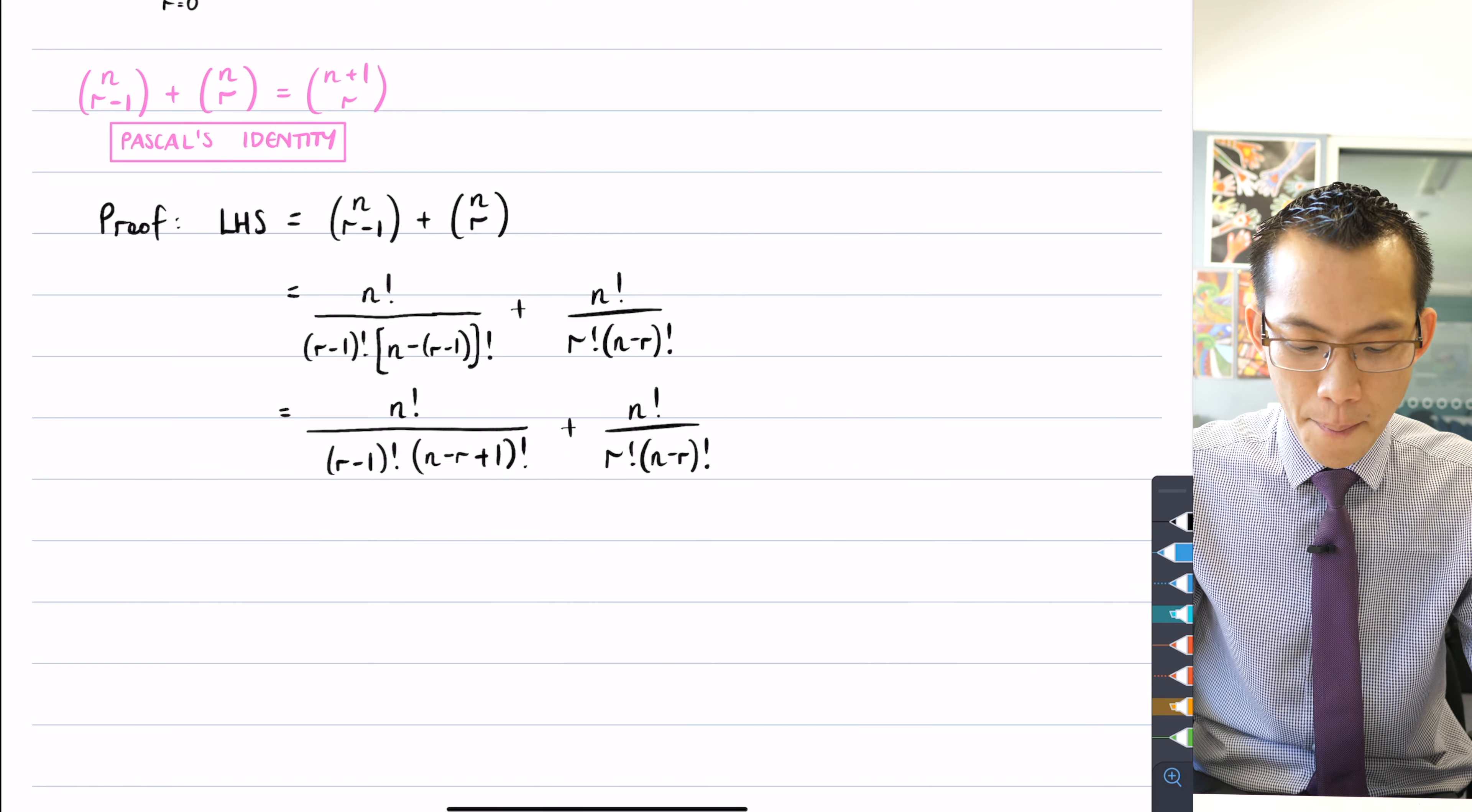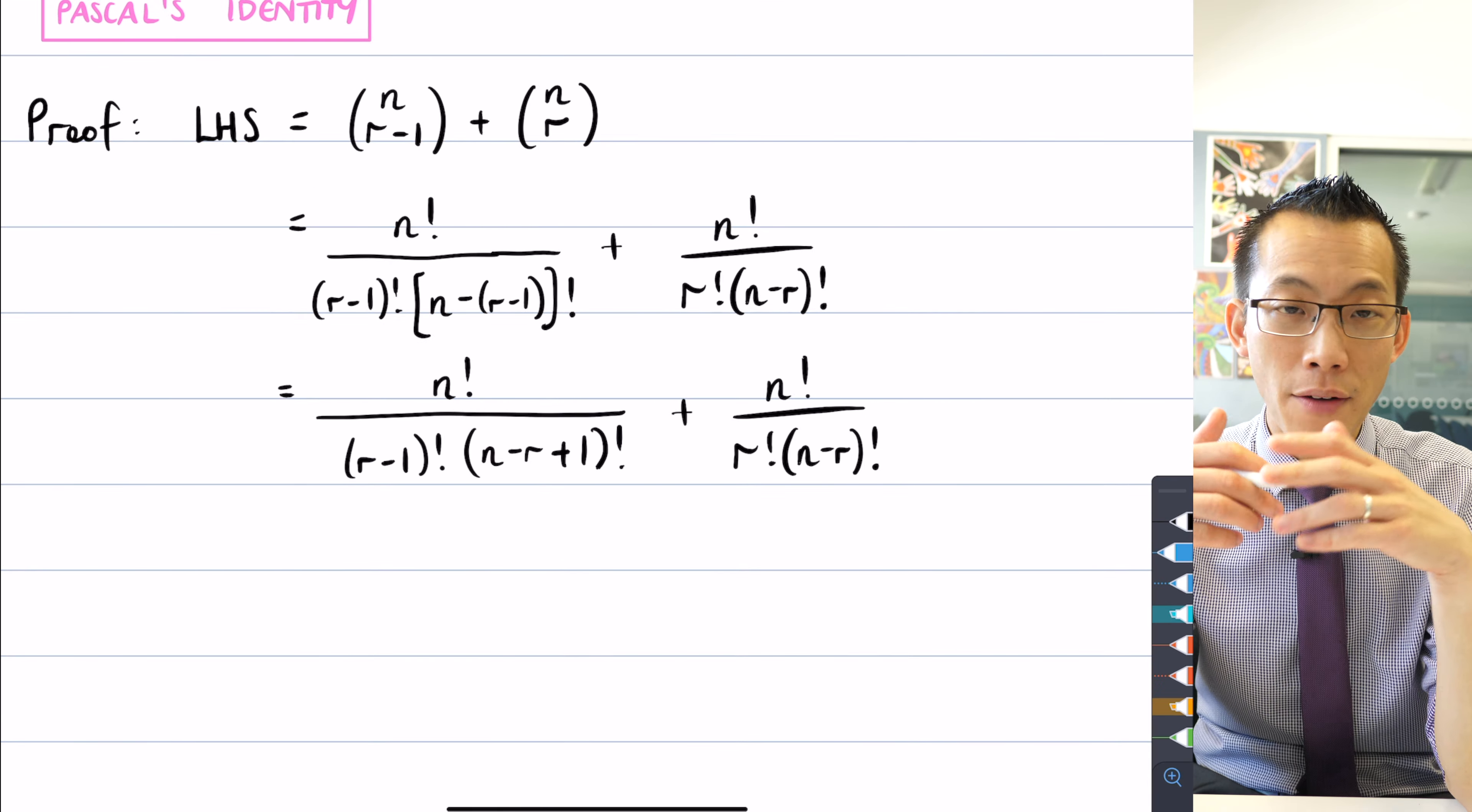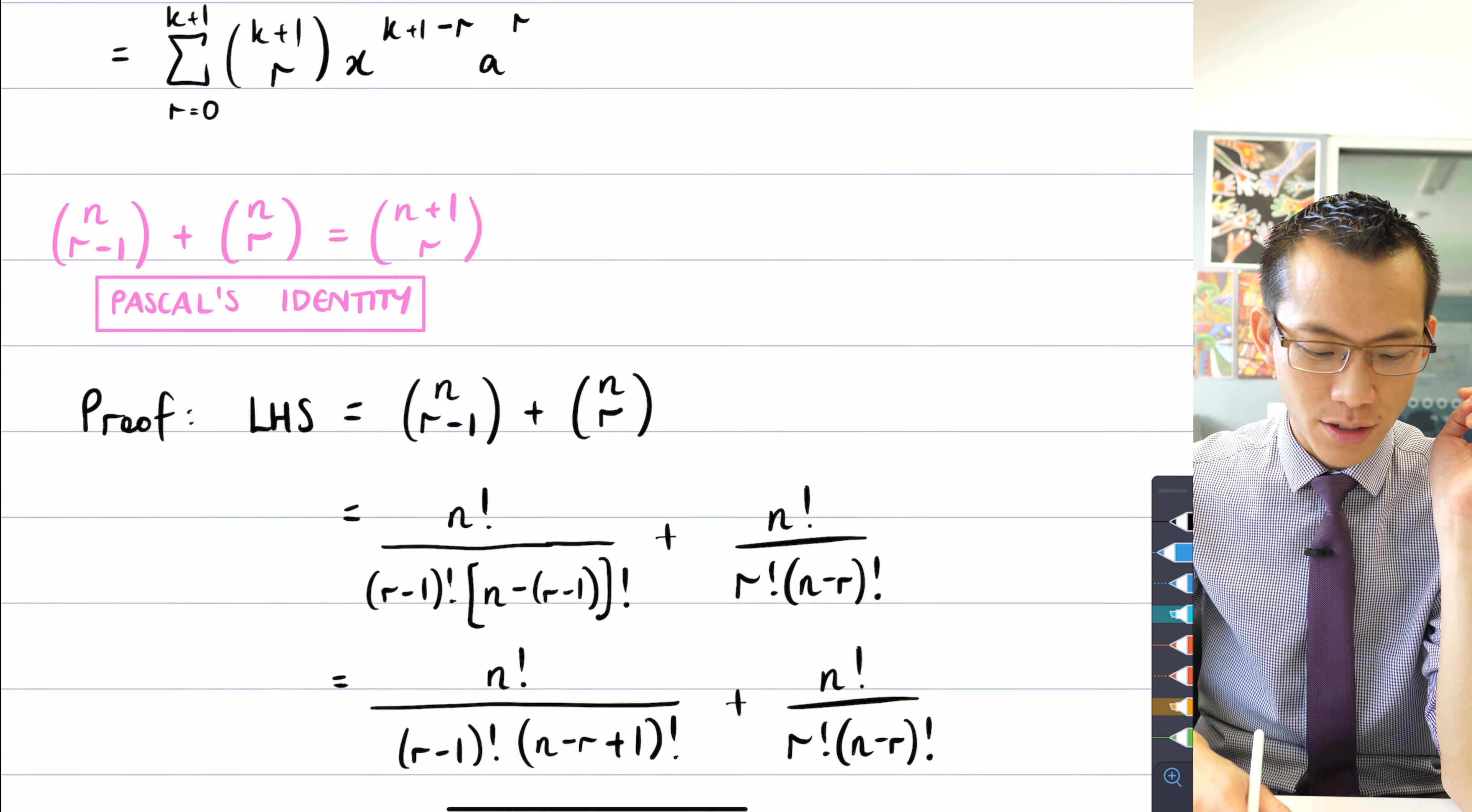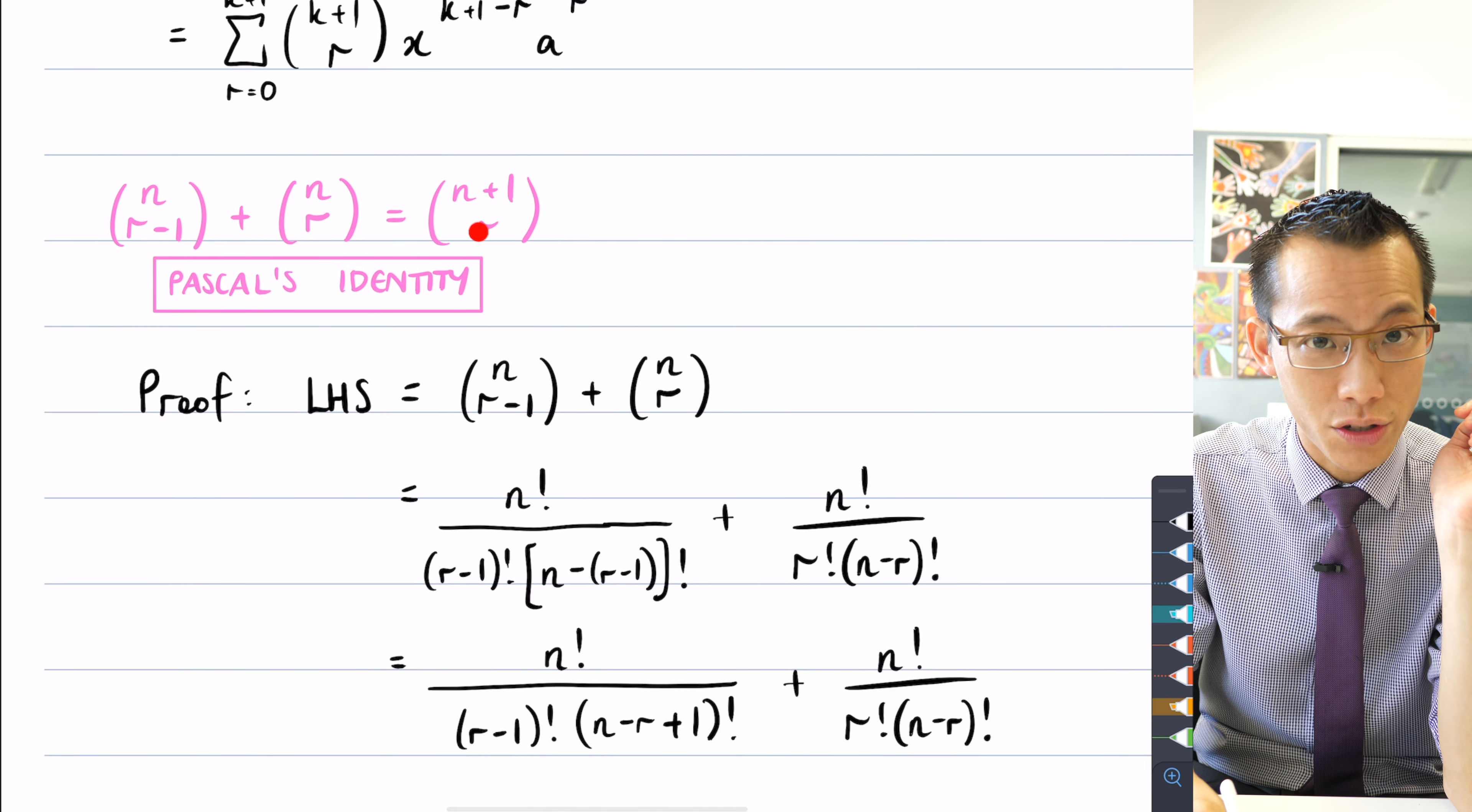Now, the reason why I added a bit of a teeny extra space here is that what am I going to try and do here? I've got two fractions. And clearly, based on what I'm trying to prove here, clearly I want to convert them into one fraction. This is where I want to arrive.